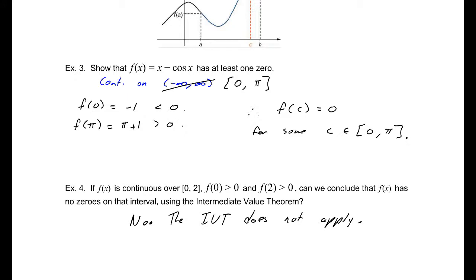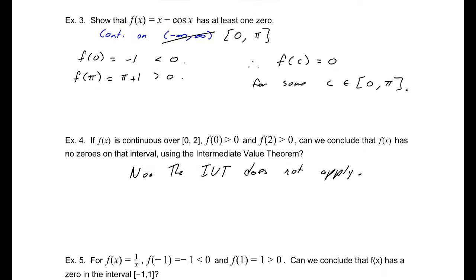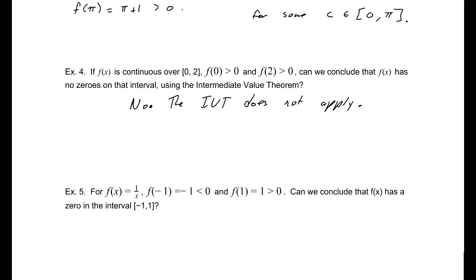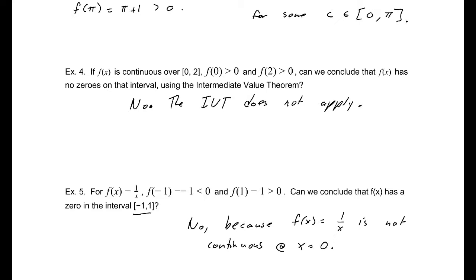Because all we know is the function is positive at two different points — we don't know that it never dips down. In our chapter on derivatives we will learn some neat tricks to determine that. For f of x equals 1 over x: f of negative 1 equals negative 1, which is less than zero, and f of 1 equals 1, which is greater than zero. Can we conclude it has a zero in that interval? No — because f of x equals 1 over x is not continuous at x equals 0. That is an infinite discontinuity, and therefore the hypothesis of the theorem is not satisfied.